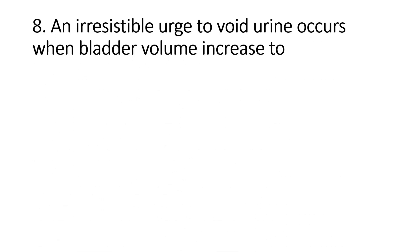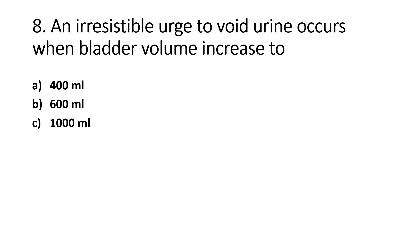An irresistible urge to void urine occurs when bladder volume increases to: Option A - 400 ml, Option B - 600 ml, Option C - 1000 ml, Option D - 800 ml. The right answer is Option B, 600 ml. The total capacity of the urinary bladder is about 1 litre; the urge becomes irresistible at 600 ml.